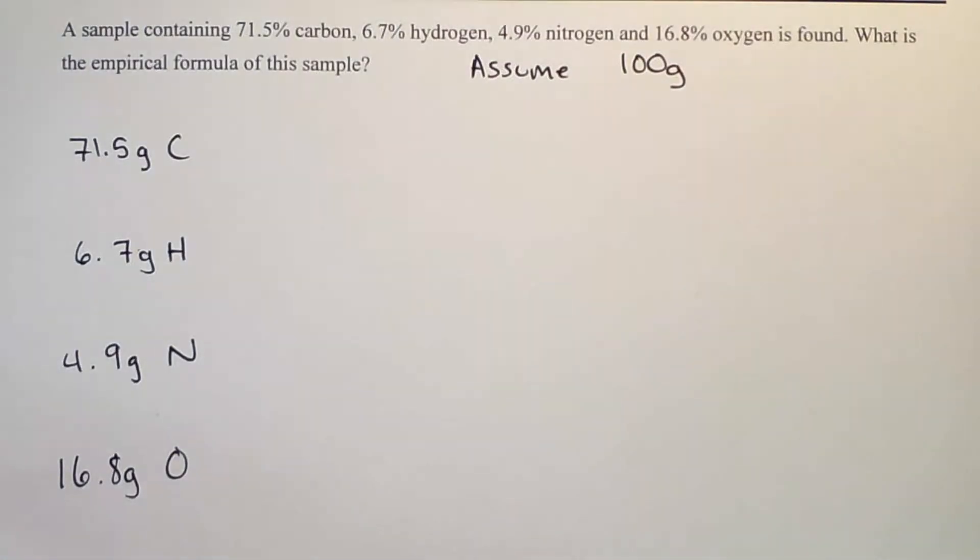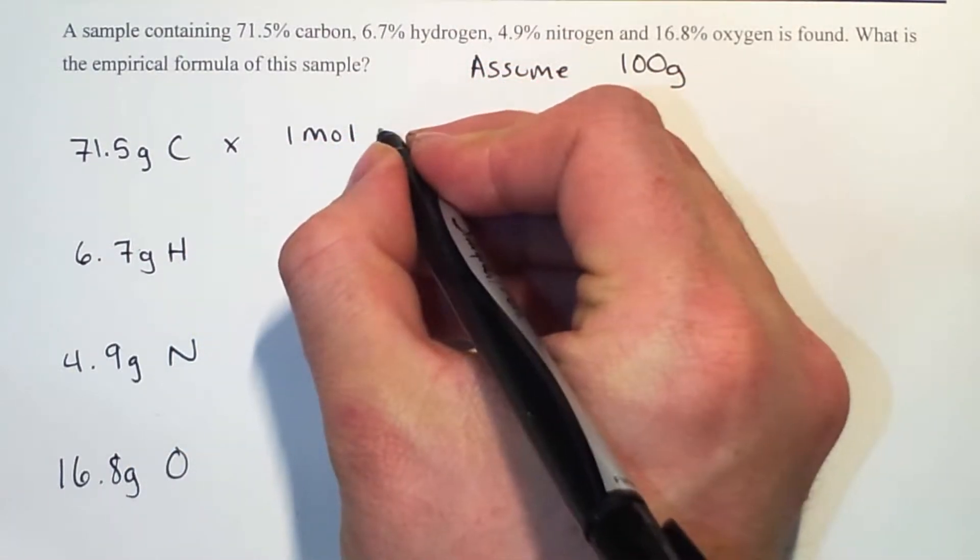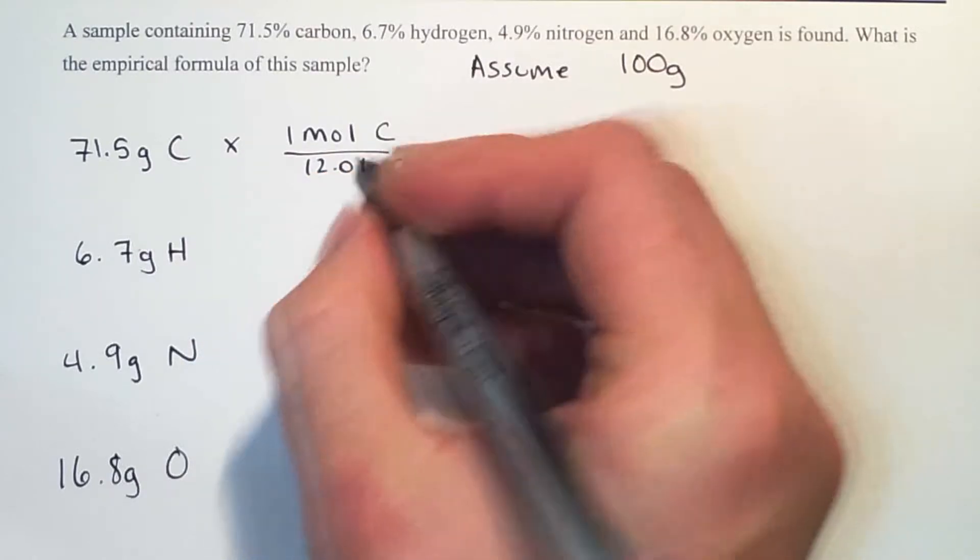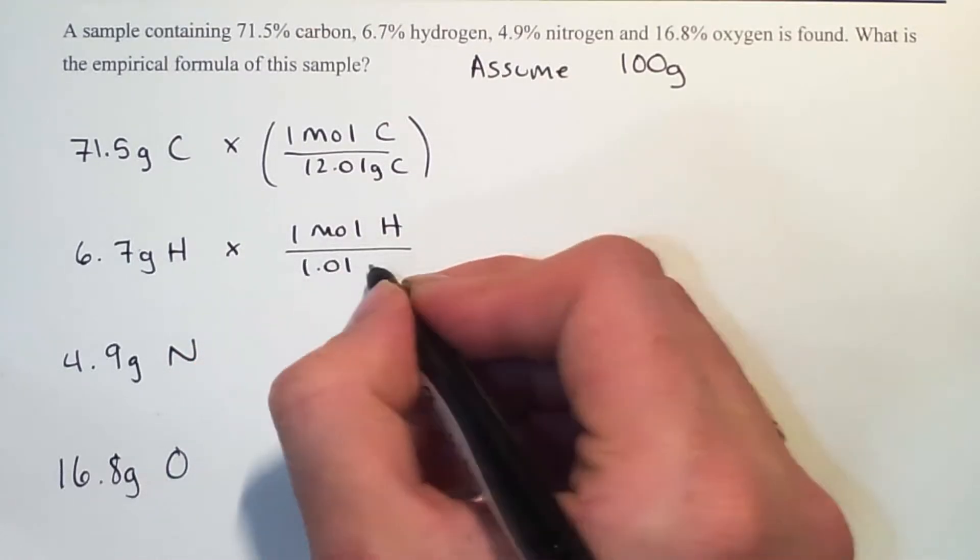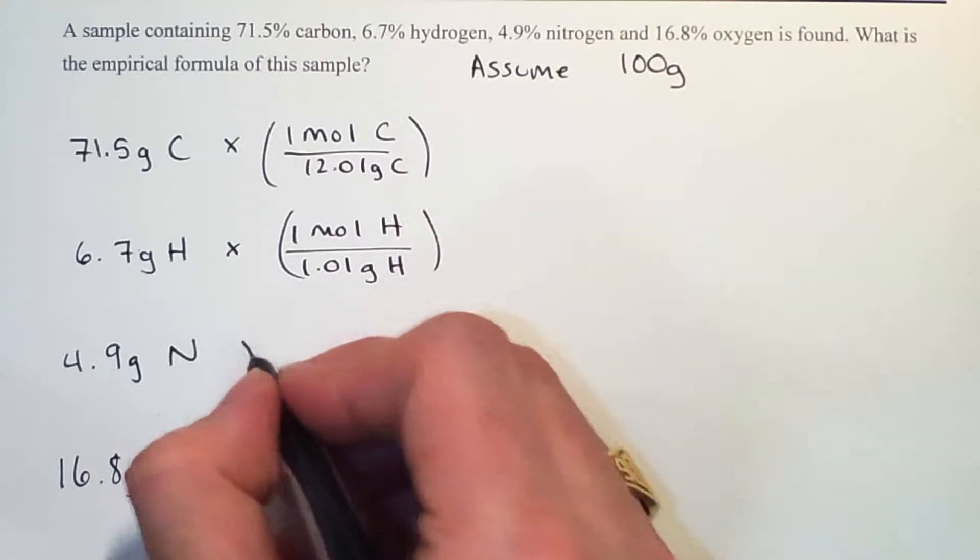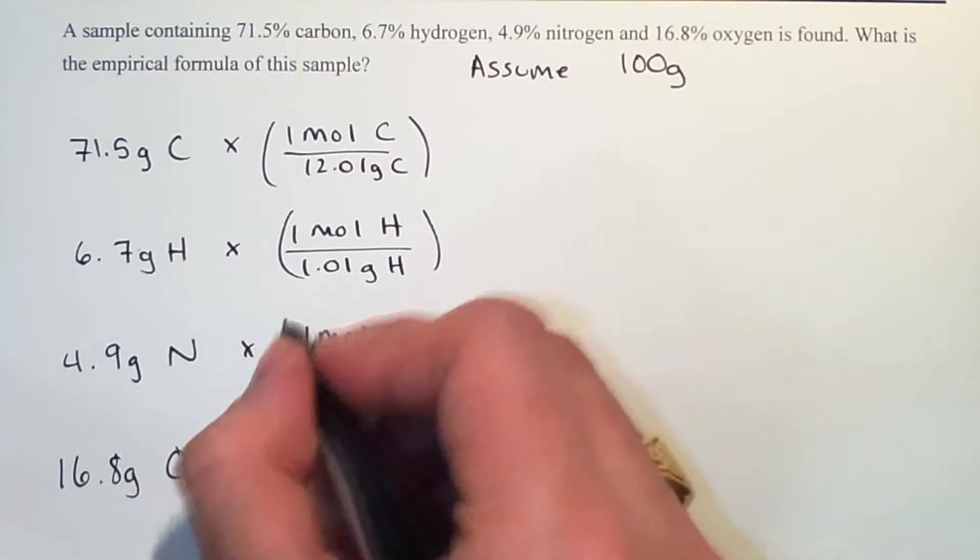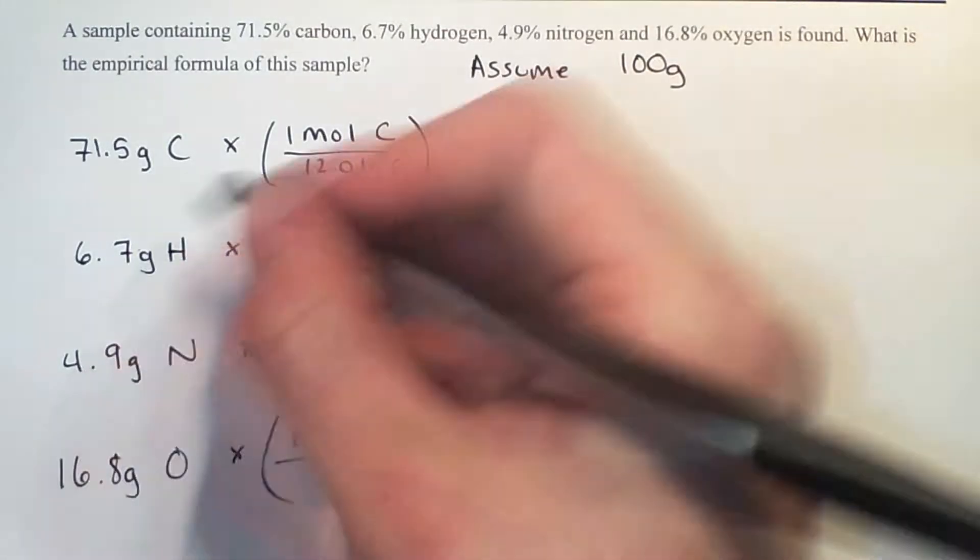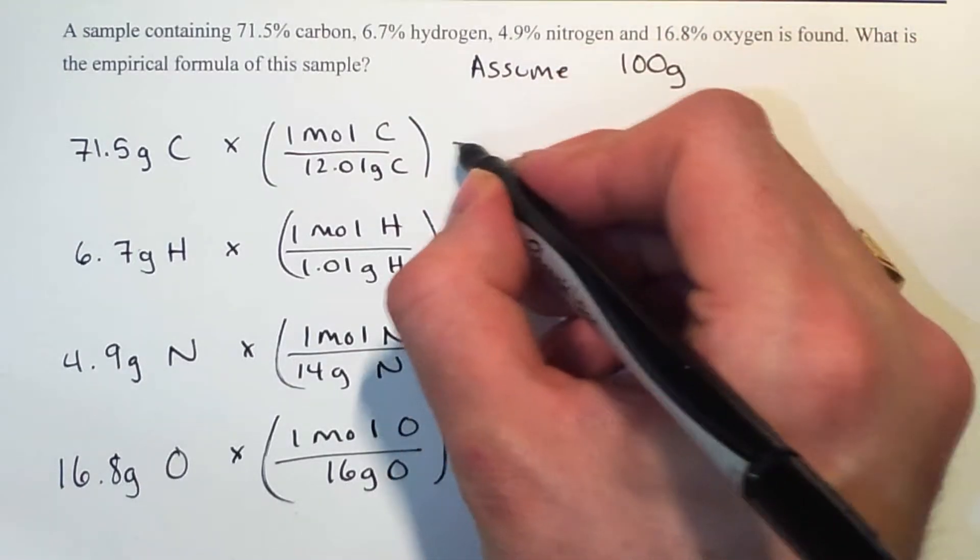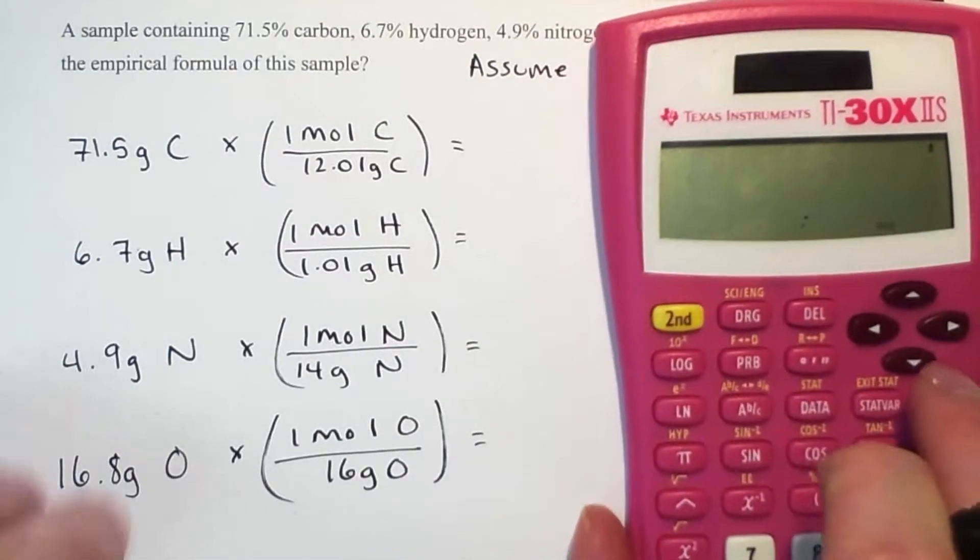I'm going to try and do all four of them at the same time. We need to convert them to moles. So one mole of carbon is 12.01 grams of carbon. One mole of hydrogen is 1.01 grams of hydrogen. One mole of nitrogen is 14 grams of nitrogen, and one mole of oxygen is 16 grams of oxygen. We can't create an empirical formula from grams because each atom weighs different amounts, so we need to go to moles.